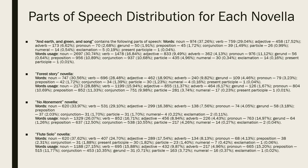No Atonement novella. Words: Noun 620, 33.97%, Verb 531, 29.10%, Adjective 299, 16.38%, Adverb 100, 7.56%, Pronoun 74, 4.05%, Gerund 58, 3.18%, Preposition 37, 2.03%, Conjunction 31, 1.70%, Particle 31, 1.17%, Numeral 4, 0.22%, Exclamation 2, 0.11%.